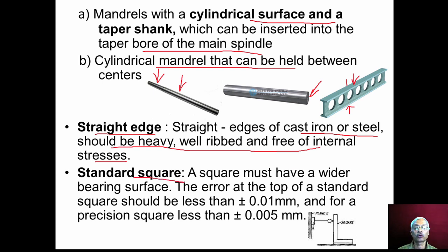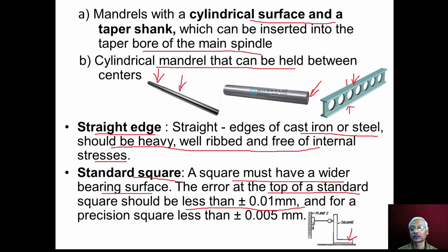Another important instrument is the standard square. The standard square must have a wider bearing surface. The error at the top should be less than ±0.01 mm when moving the dial indicator from bottom to top. For a precision square, the error at the top should be less than ±0.005 mm.